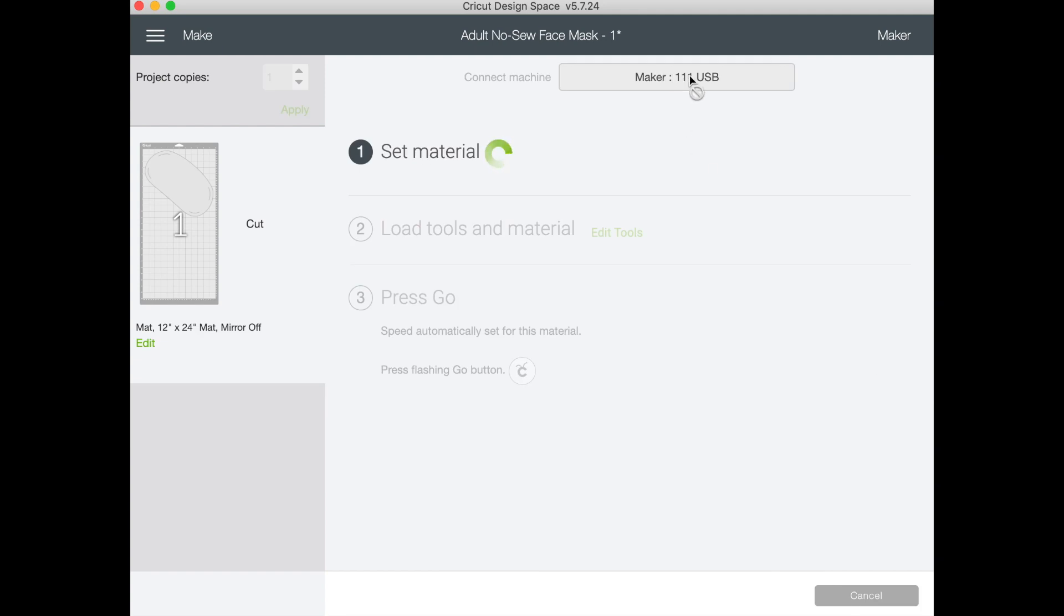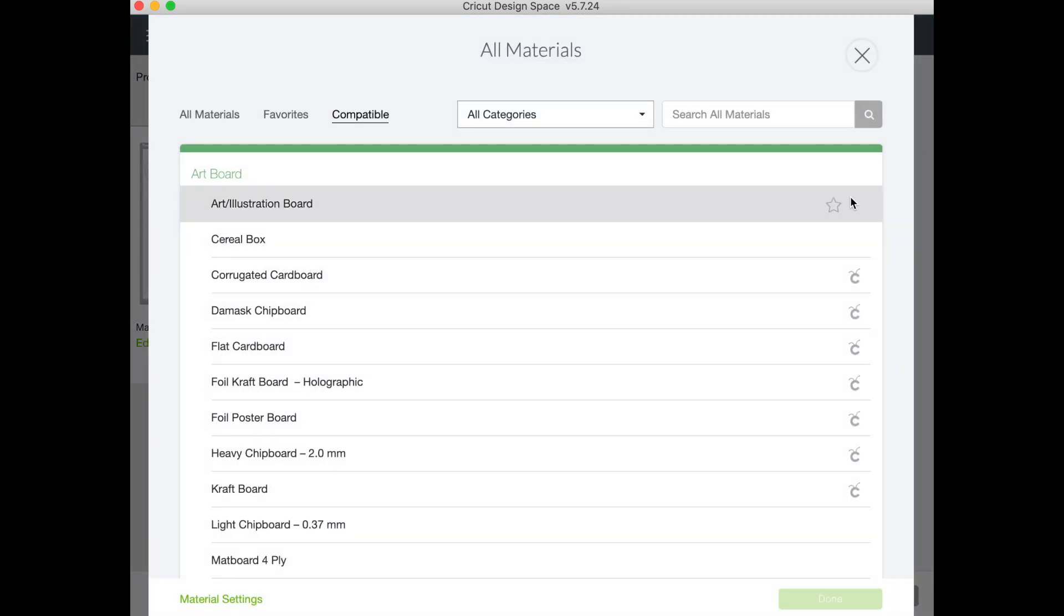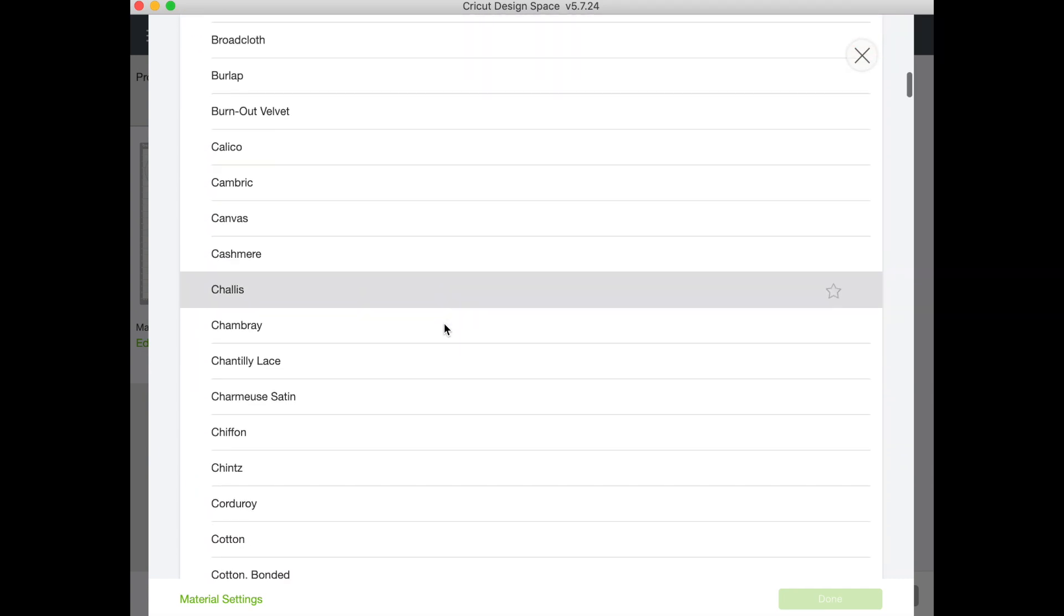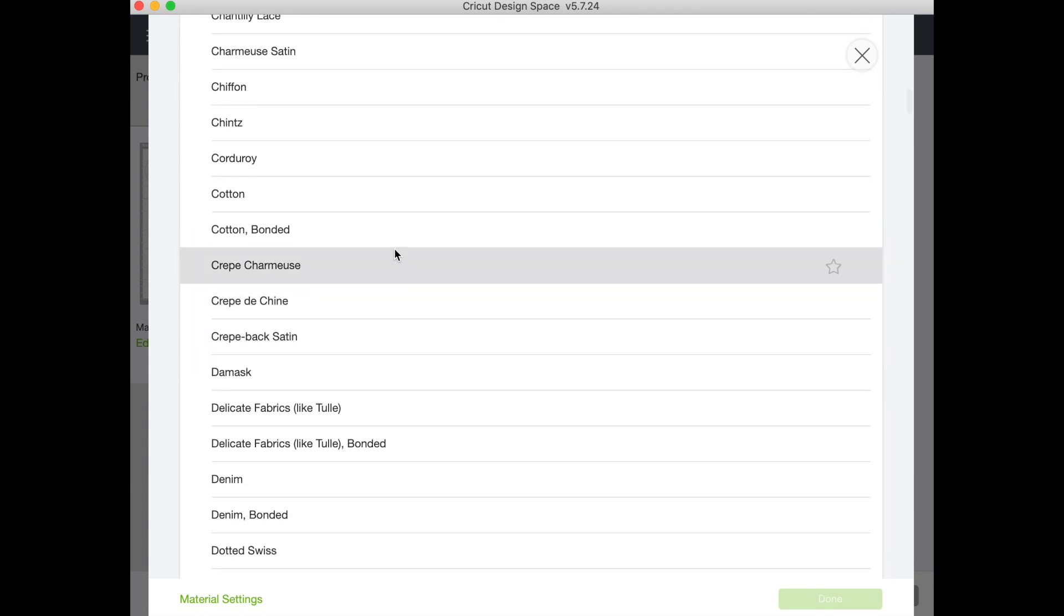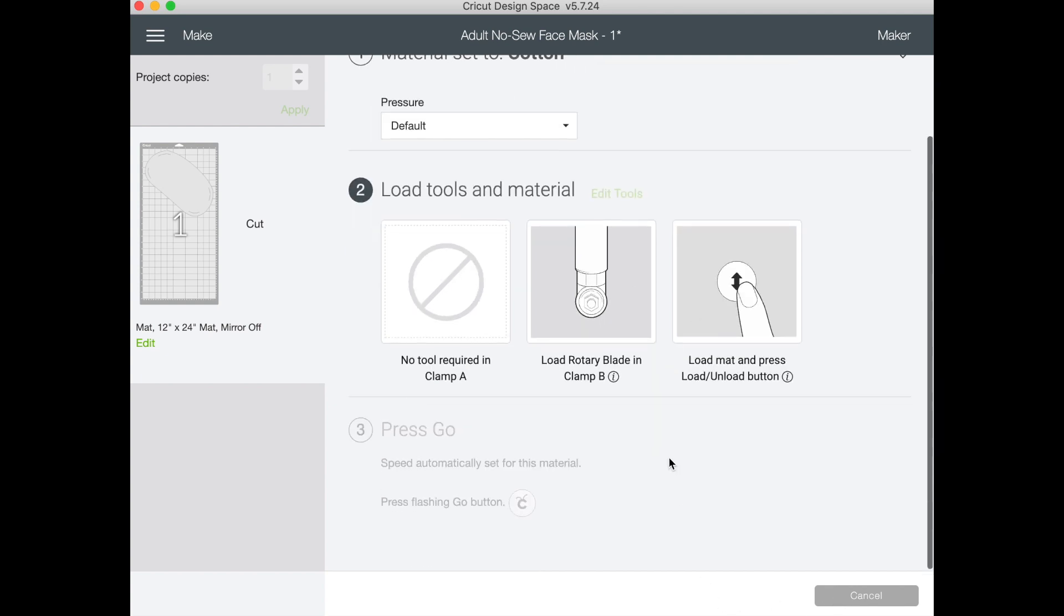Okay so our Maker is connected and now it's telling us to set the material and we of course don't want glitter iron on so we're going to browse all materials. We're going to go to fabrics and what I am using is a t-shirt fabric which is just a cotton. Okay and so we are going to put in our rotary blade and we're ready to cut. So let's hop over to the craft table and we'll cut out our fabric and put it on our mat and I'll show you how that's done.